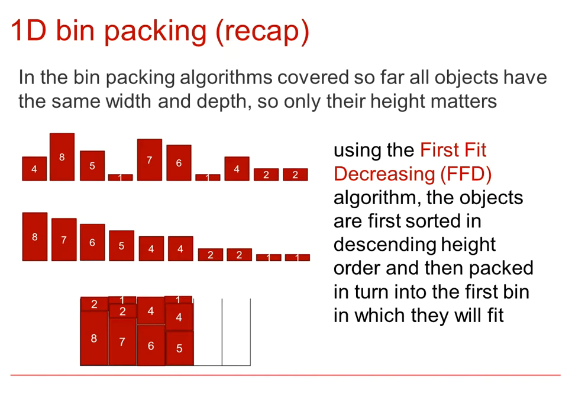Using the first fit decreasing algorithm, the objects were first sorted into descending height, and then packed in turn into the first bin in which they would fit. Note that the bin height was 10 units, and that this first fit decreasing algorithm was a more efficient algorithm than the first fit, and that in this particular example, it gives an optimum solution, which is equal to the lower bound.